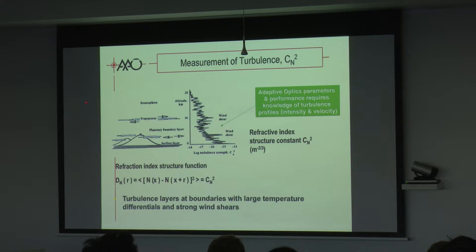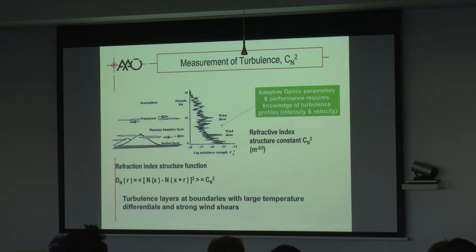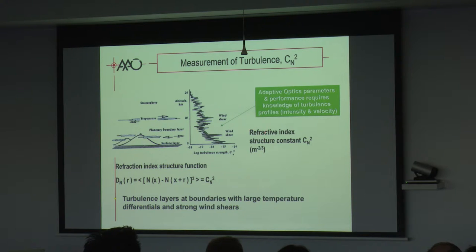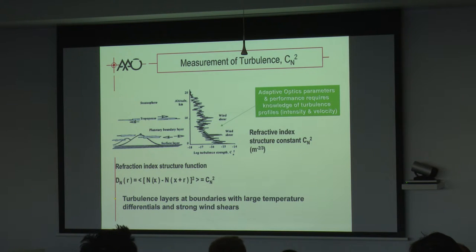Critical to AO performance is the structure of the atmospheric turbulence. This is a typical turbulence profile: it's strongest near the ground in the boundary layer, and then at the tropopause you get some thin layers. The atmospheric turbulence is measured as a refractive index structure constant — the Cn² parameter — and by studying the atmospheric profiles we can use this as an input to simulations for adaptive optics.